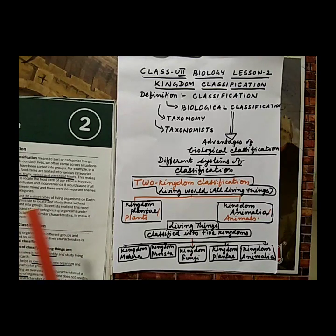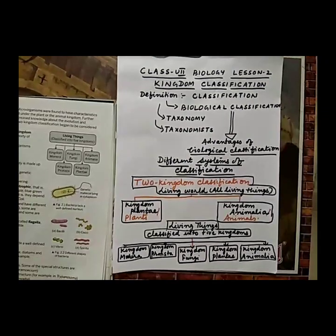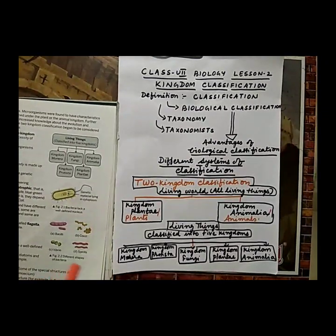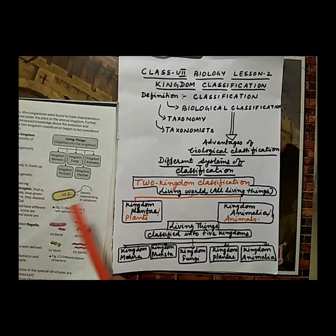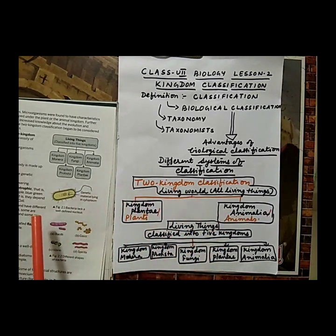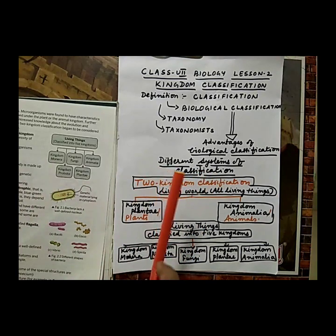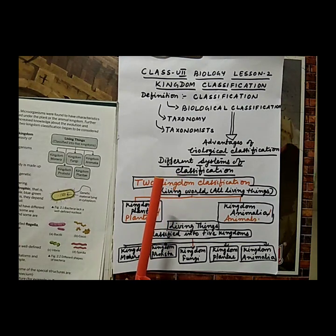Under classification, different theories are given to provide ideas about different systems. In our lesson, two types of classifications are given: two kingdom classification and five kingdom classification. Before studying these, we look at different systems of classification based on the habits, habitats, mode of reproduction, and other features of organisms.